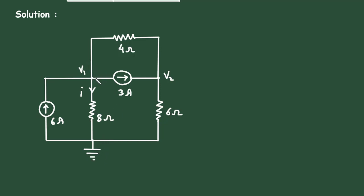Now let's apply KCL at node V1. Before that, let's assume this is current i, this is current i1, and this is current i2.